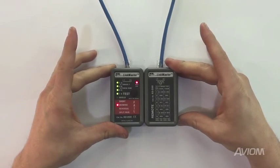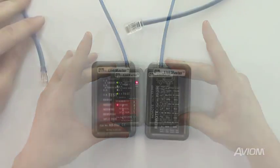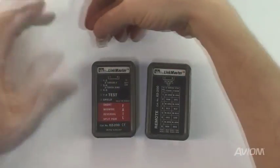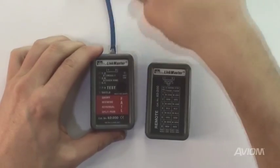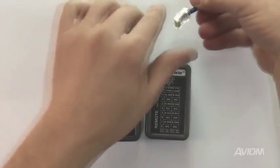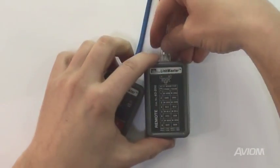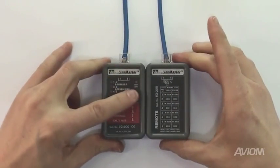The test set is made up of two devices, the tester itself and the remote device. Plug one end of the cable into the tester and the other end into the remote end. Press the test button and the tester will tell you if there's a problem, the nature of the problem and which pairs it's on.